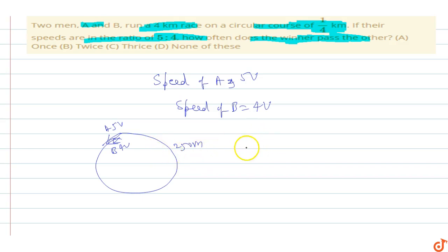In 5 rounds, the total distance travelled by A is 1/4 times 5, which equals 5/4 km. 1/4 km is the total length of the circular track.